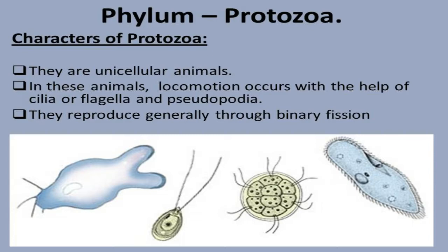Characters of Protozoa: they are unicellular animals. Locomotion occurs with the help of cilia, flagella, and pseudopodia. They reproduce generally through binary fission. Unicellular animals means animals made of a single cell, such as Paramecium and Amoeba.